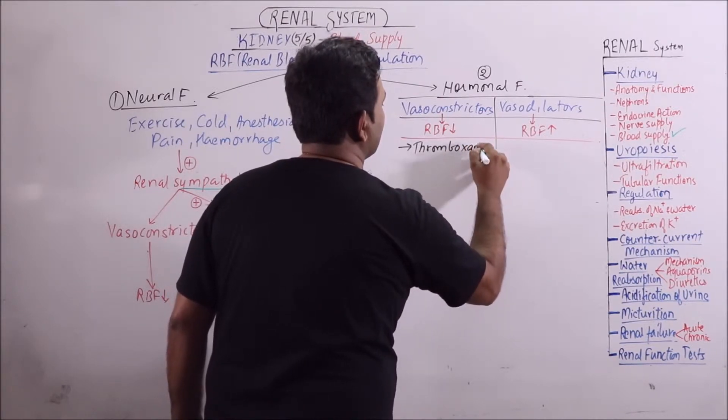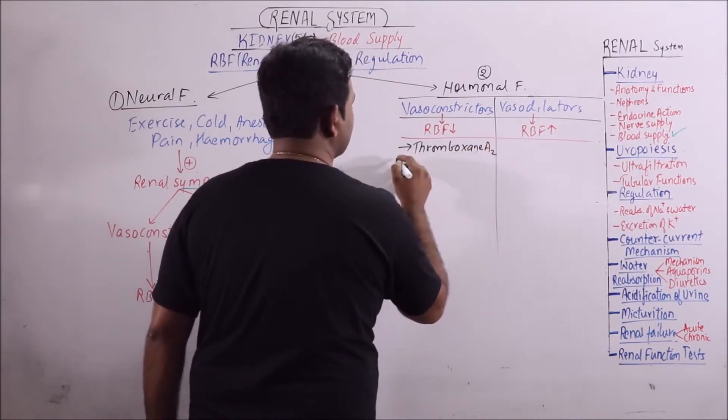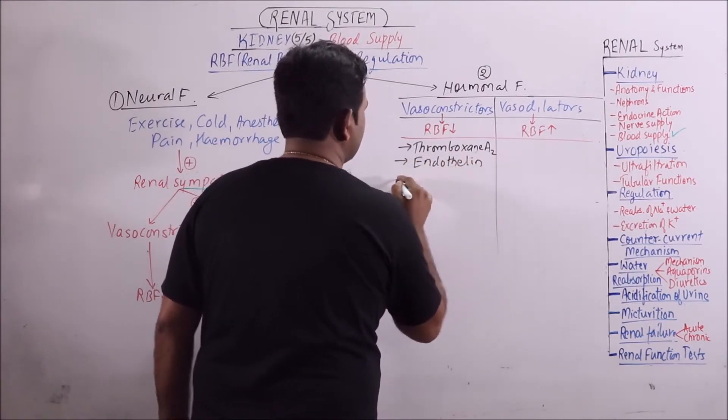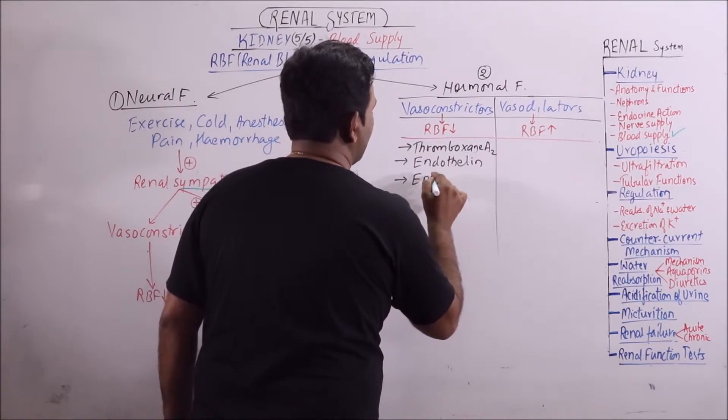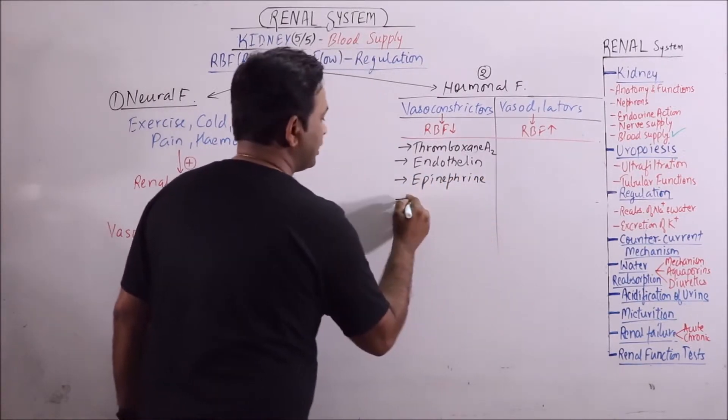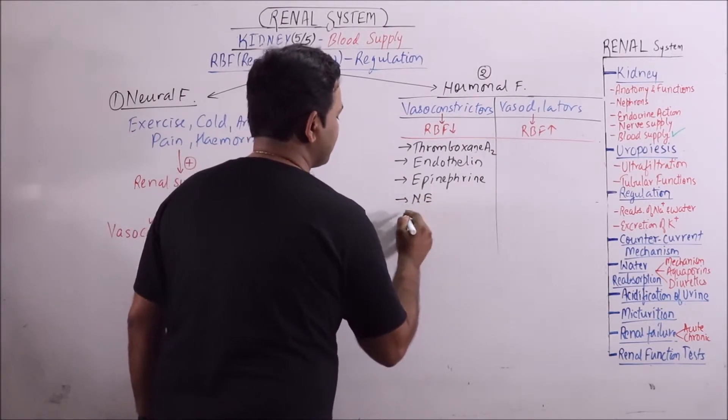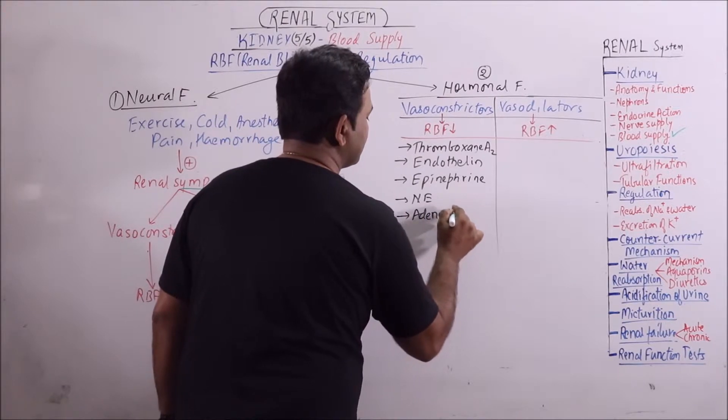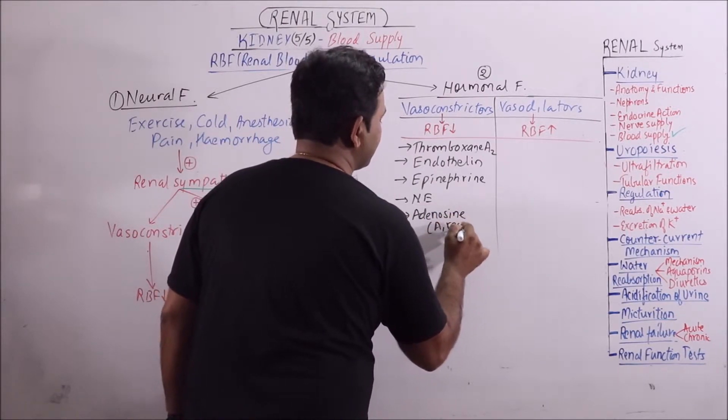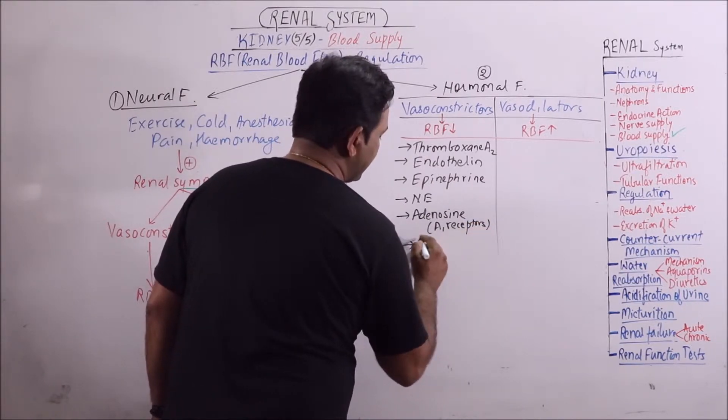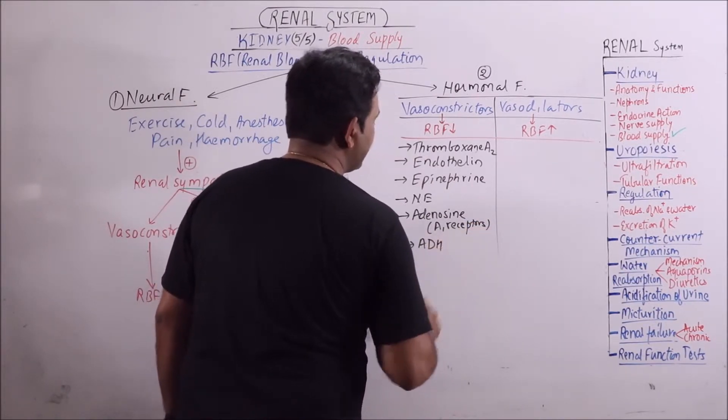Now here is the list of vasoconstrictors: thromboxane A2, then endothelin, epinephrine, then norepinephrine, then adenosine A1 receptors, then ADH.